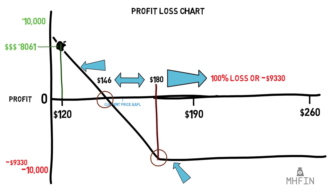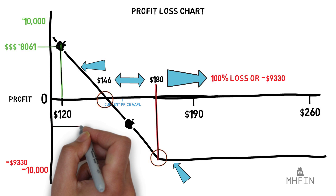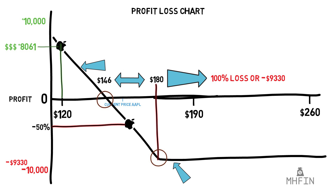Let's go through some more examples. We can plot any Apple price at the date of expiration anywhere on this chart and follow it out to the y-axis to get our profit or loss. In this example we can conclude we lose nearly half our investment. And in this one we can easily conclude that we would lose 100% of our investment because the price falls above the $180 100% loss point.